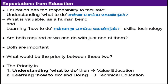So what we are expecting from education — education has the following responsibility. It is understanding what to do: as a human being, what is valuable? And similarly, how to do it by using skills and technology. In modern society, we are educating students on how to develop skills and technology, without stressing what to do. So the priority here is understanding what to do — that is called value education. But if you concentrate only on the how-to part, then it becomes technical education.